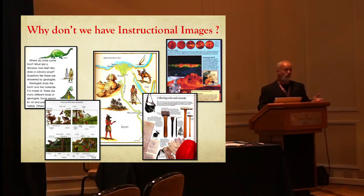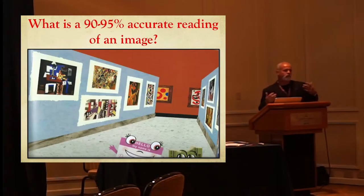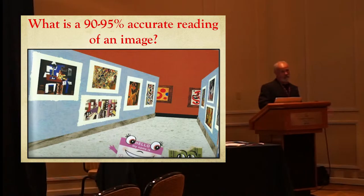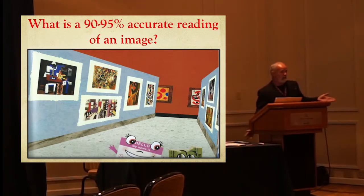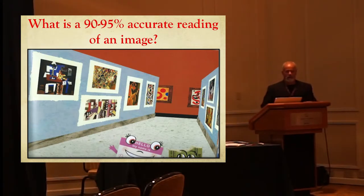Will we start doing this kind of stuff that we've done to written language? Which leads me to the question: what does a 90% to 95% accurate reading of an image look like? Which is what the instructional text would be. Does it mean you cover one eye so you only see 90% when you're walking around the museum? I just don't know what that means in working in the kind of text that I work with.